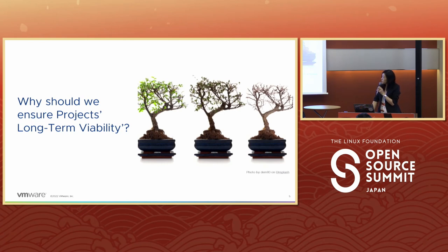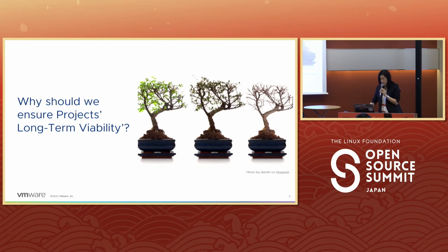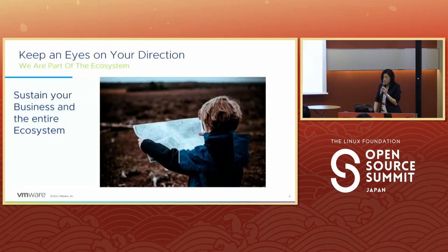Why do we ensure the project's long-term viability? When our business relies on open source, we must provide real commercial support for our customers — enterprise-grade software. We have a responsibility the same as for our proprietary software, because they're both part of the product. If these projects are no longer maintained or if we don't understand the entire project, we will be unable to support our customers. Therefore we need to guarantee the quality of the open source in our products and its continuous availability, aligned with our portfolio. As open source projects are maintained by communities and because we are part of the ecosystem, we have to ensure they will continue to be available and successful for the long term, for both our business and for the communities.